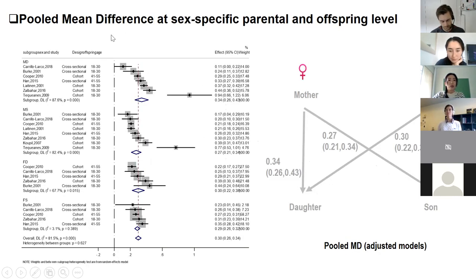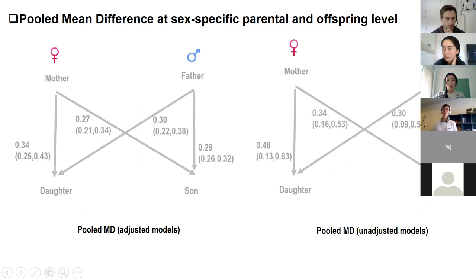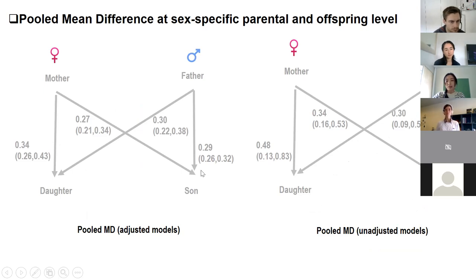We did a similar analysis for unstandardized mean differences, and observed similar patterns — both mothers and fathers influence offspring BMI regardless of offspring gender. If we look at the unstandardized mean difference for adjusted versus unadjusted models, it's quite interesting: after adjustment, the association became attenuated, indicating confounding, except for the father-son relationship, though that may be due to very few studies reporting it.